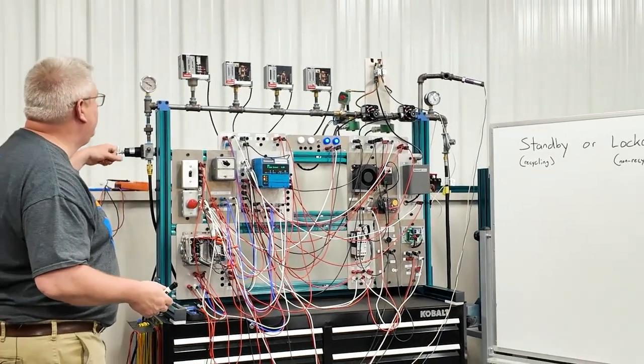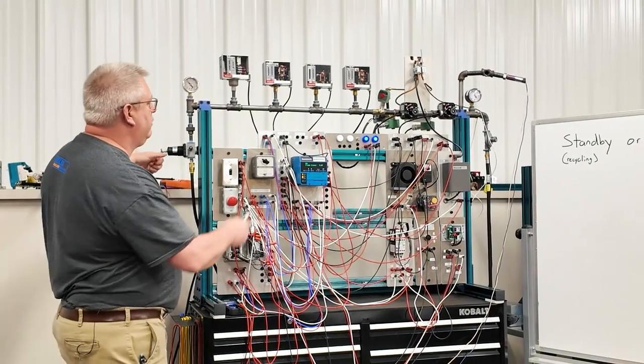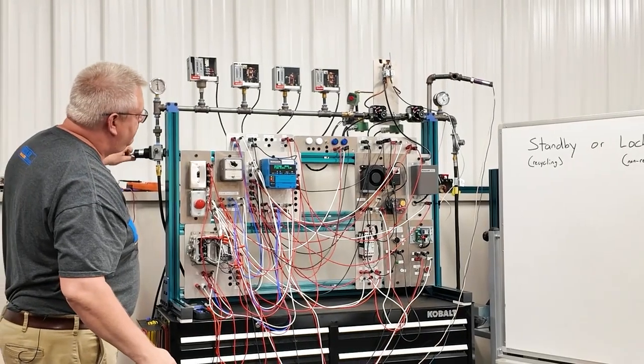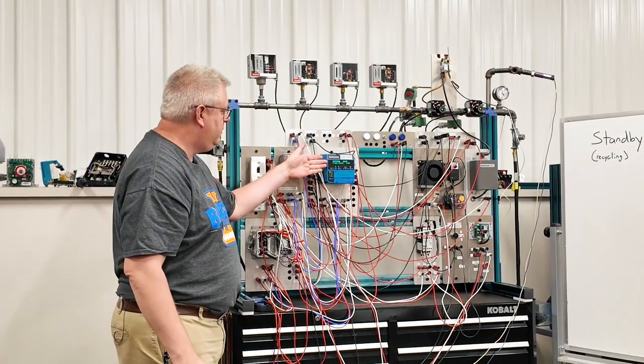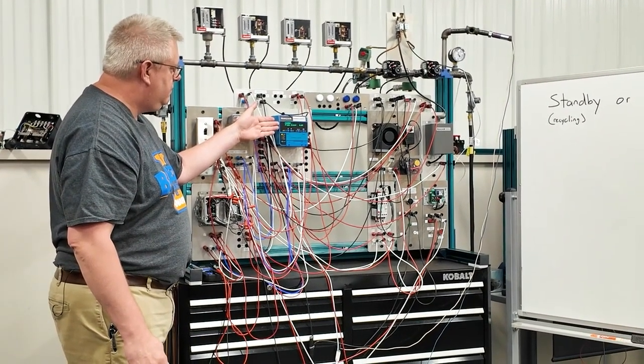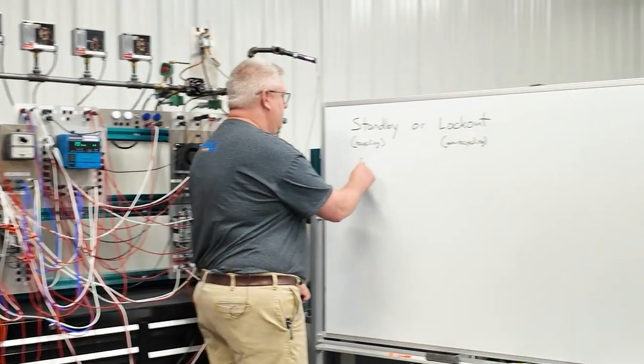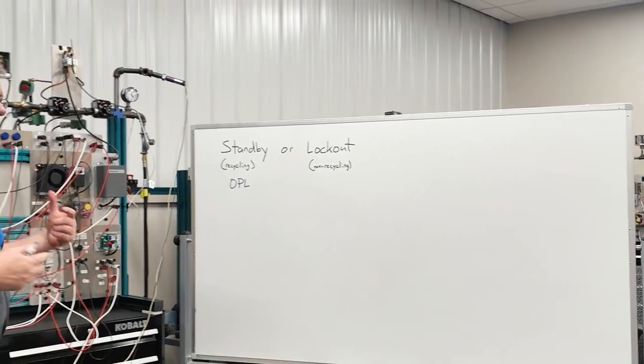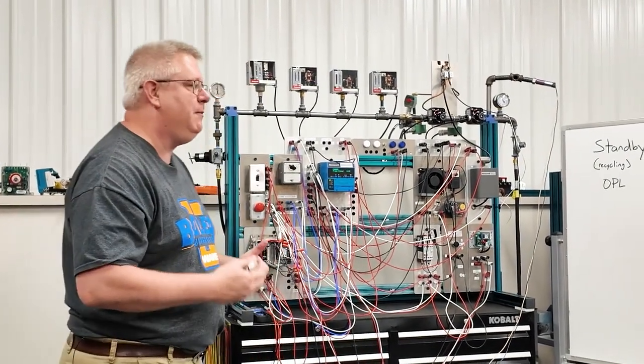So I'll demonstrate that by tripping this boiler on high steam pressure. So I'm increasing the pressure, we're going to trip on this switch. There, we've shut down. We've gone to post purge. And then standby. So our operating pressure limit, OPL, is in our standby circuit. So that's one of the candidates to troubleshoot if we're in a standby mode.